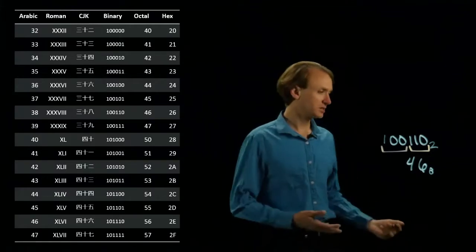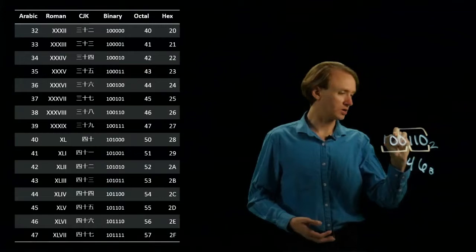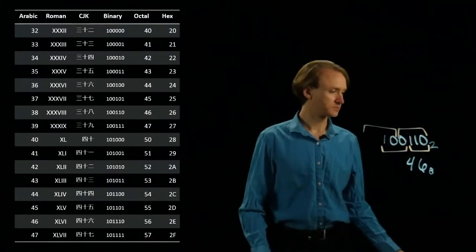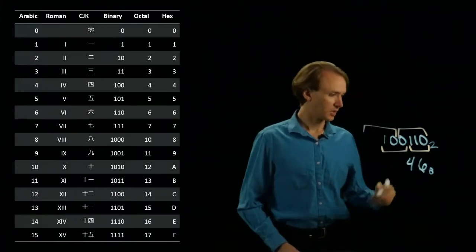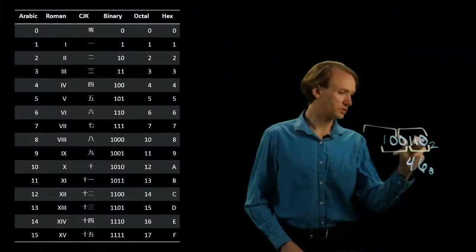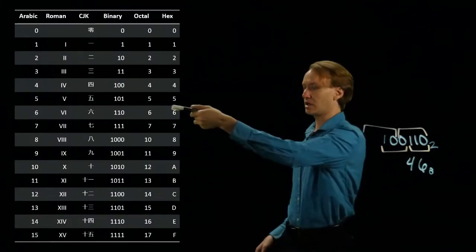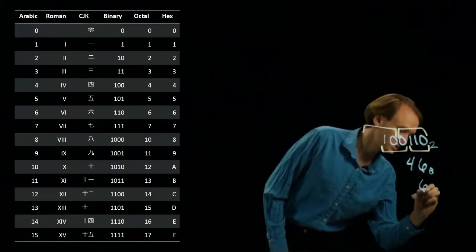So for hexadecimal, I'll do the same thing, but I'm going to make blocks of 4 bits at a time. So this time, I'm going to find 0110 in my table, and I look over and that's 6. So I'll write down a 6 for hexadecimal again.